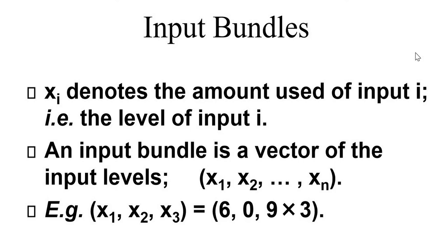Input bundles. We can show these input bundles. x_i denotes the amount of input used of input i — that means the level, or quantity, of input i. An input bundle is a vector of the input levels x1, x2, x3, and so on, where x shows the quantity.